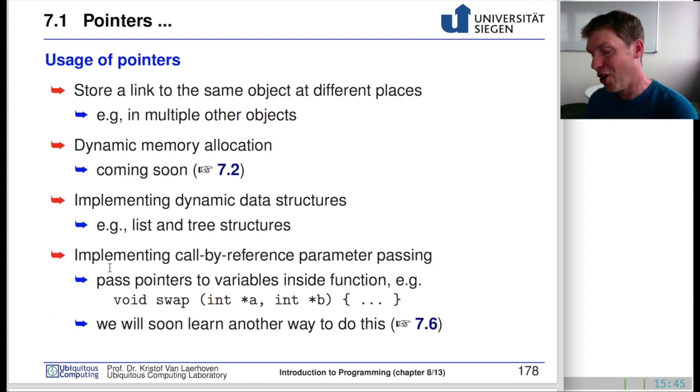Later we'll see using pointers in arguments. If we have the swap function, we've already seen that you should not expect that those values actually get switched because these are called by values, these parameters. With pointers you can actually call by reference. If you call by reference, you can expect that those exact variables are interchanged with the swap function. That is something we'll see later in section 7.6.